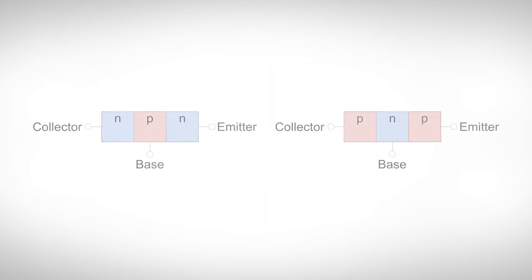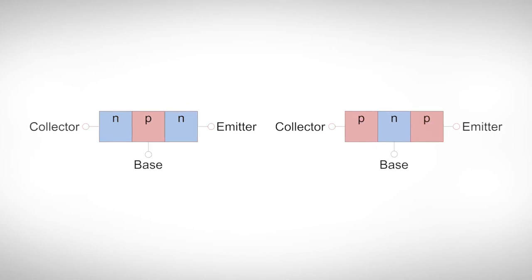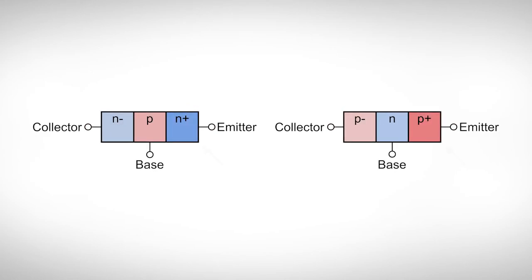At first glance, the bipolar transistor appears symmetrical and we might be tempted to swap emitter and collector. But a real bipolar transistor has a heavily doped emitter and a lightly doped collector, relative to the doping of the base. This way physicists improve the transistor's performance. But this also means our bipolar transistor is no longer symmetrical. So be careful when you wire them into your circuit.